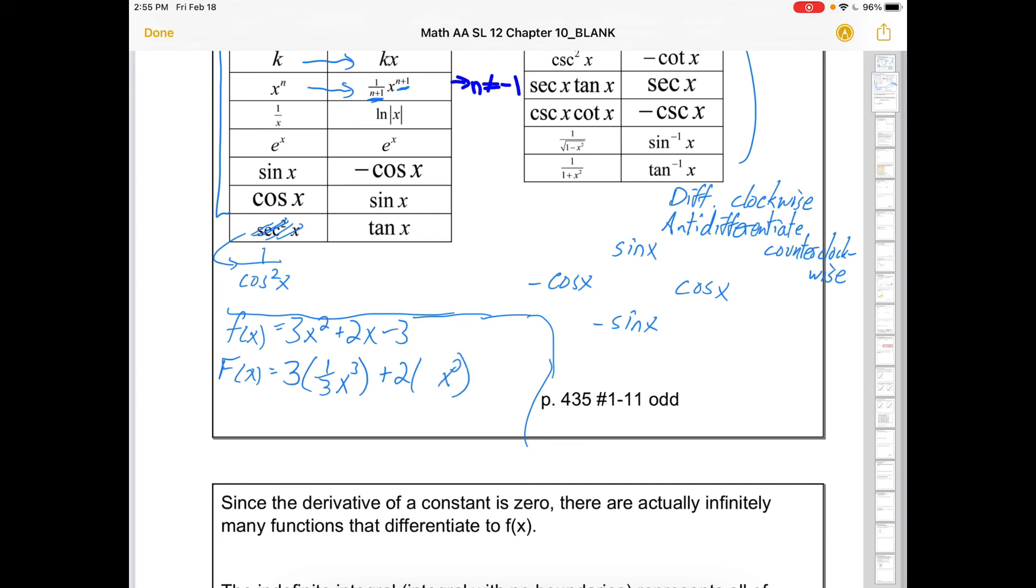2x, power goes up by 1, flip of the new power goes in front. And the anti-derivative of a constant is that constant times x. And so we'd get x cubed plus x squared minus 3x, which we would still go and check. We'd find the derivative of the anti-derivative and ask ourselves, does that get us back where we started? Heck yes. It gives us f of x again, so this must have been a correct anti-derivative.